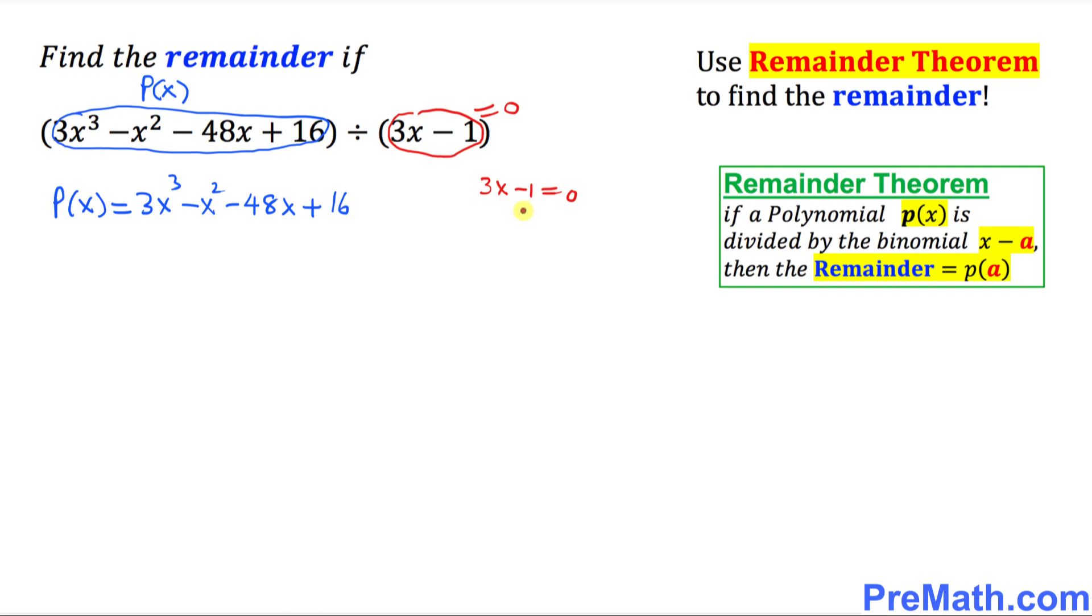Solve for x. So add 1 on both sides. So 3x turns out to be a positive 1. Divide both sides by 3. So x turns out to be 1 over 3.